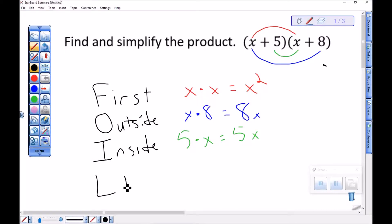And then finally, the product of my last two terms. So the last terms are 5 and 8. So positive 5 times positive 8 is 40.